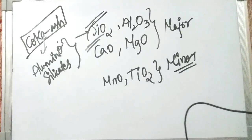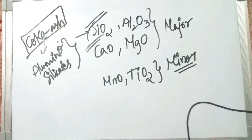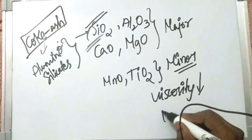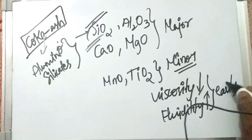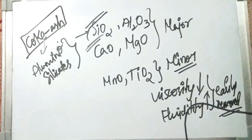We will discuss more about slag properties — basicities, viscosities, network breakers, and network formers — in the steel making section, where slag is more important. But one key point to remember: the viscosity of blast furnace slag should be low, so that fluidity is high and the slag can be easily removed.